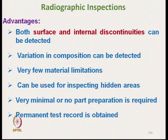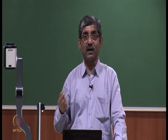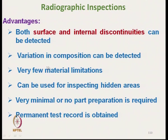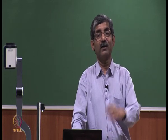The advantages of radiographic inspection are: both surface and internal discontinuities can be detected. In case of any discontinuity in the internal zone of the composite or on the surface, it can be detected. Variation in composition can be detected. There are very few material limitations, so it can be used for a wide range of materials. It can be used for inspecting hidden areas. Very minimal or no part preparation is required — we do not need to prepare any part like other methods. A permanent test record is obtained, so we can get a permanent film which can be referred to in the future.